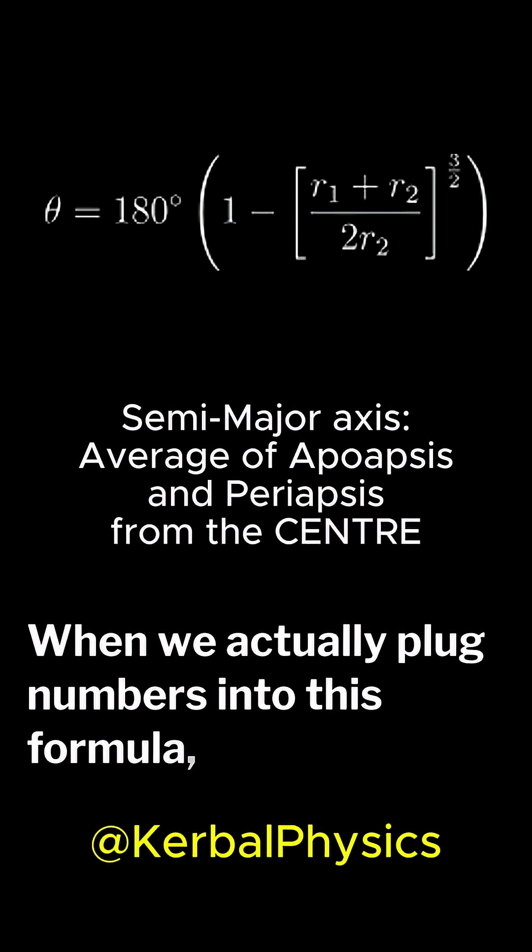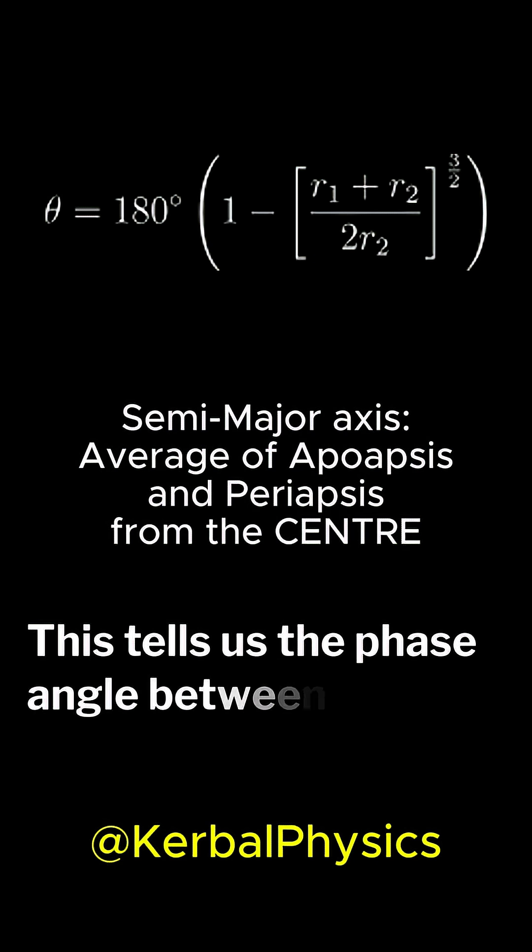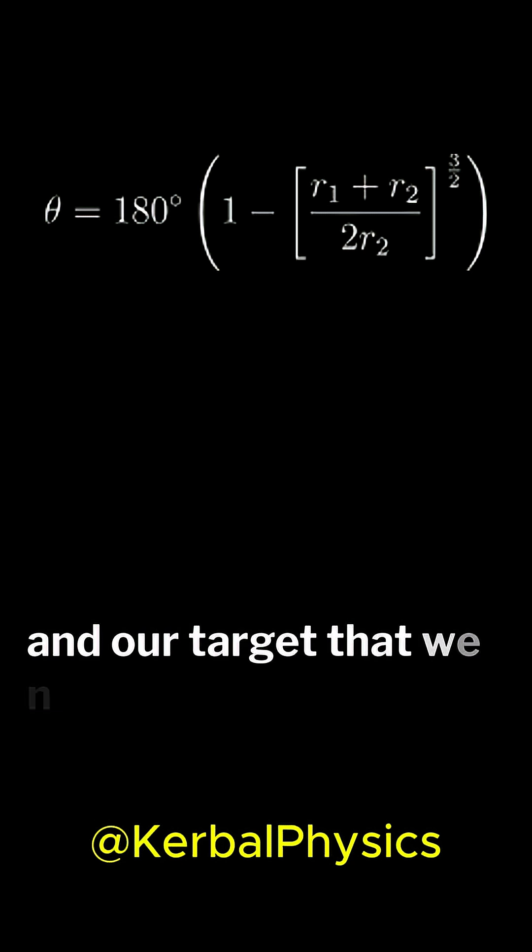When we actually plug numbers into this formula, we get an angle in degrees. This tells us the phase angle between our starting point and our target that we need to do our maneuver from.